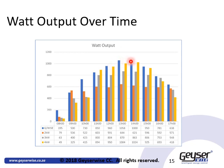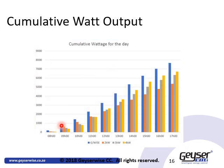We will observe from this chart that in the early morning, the 4 kW element performed fairly low compared to the GizaWise and the 2 kW element. A similar occurrence takes place in the afternoon as the sun moves over. Once again, looking at the cumulative energy production for the day, the GizaWise with the variable resistive heating element outperformed any of the other elements used during testing.